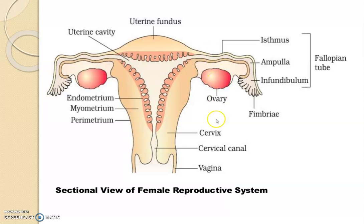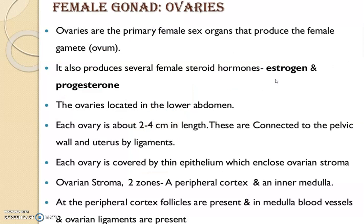This is an important diagram of the female reproductive system. The red-colored structures are the ovaries, the cervix region, cervical canal, vagina, uterus, and uterine cavity are visible. The uterus is also known as the womb. The fallopian tube, where fertilization takes place, consists of three parts: isthmus, ampulla, and infundibulum. The female gonads are the ovaries, which secrete hormones like estrogen and progesterone. The ovaries are located in the lower abdomen and are about 2 to 4 centimeters in length.